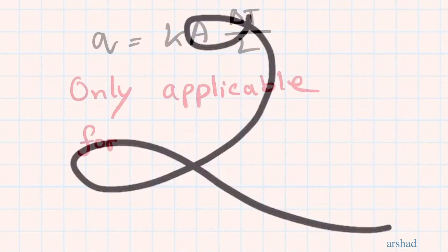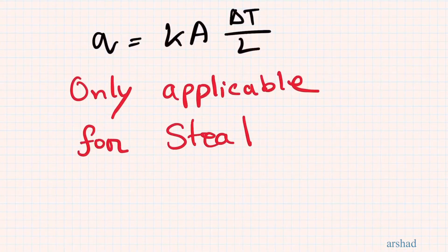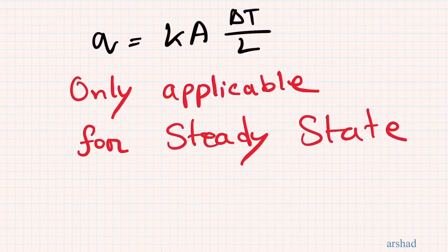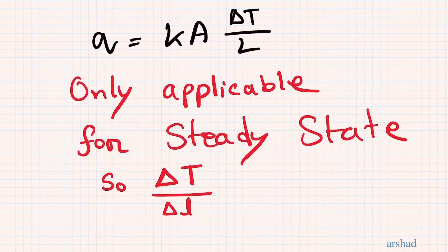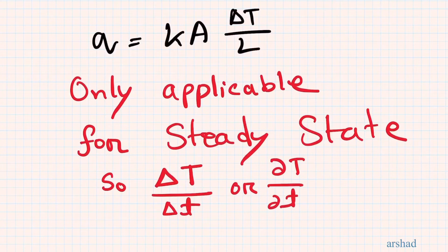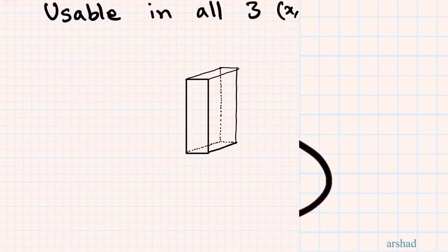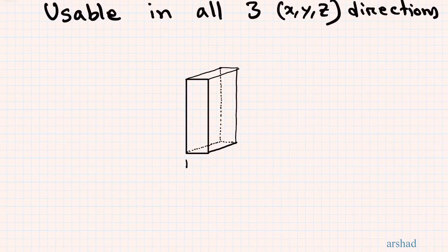Number two: Fourier's law is applicable only for steady-state problems — problems where temperature does not vary with time. If temperature does vary with time, the delta T value would not be constant, so for this law to be applicable the temperature gradient with respect to time must be zero.